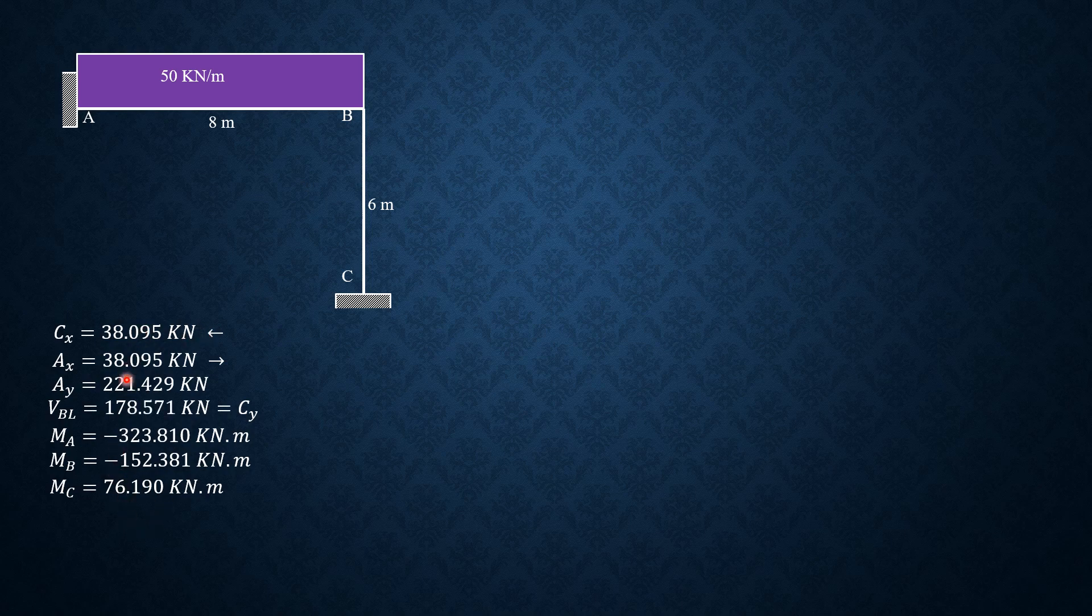So Ax is 38.095 kilonewtons. Ay is 221.429. This is the figure where we draw the shear force diagram. First we go up by 221.429, then minus 50 times 8.